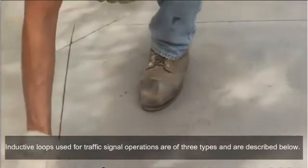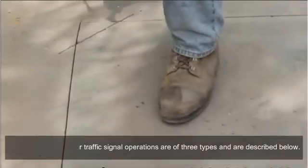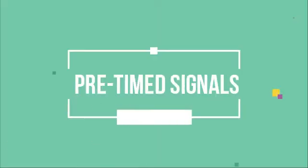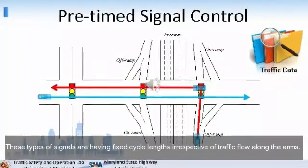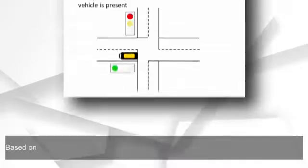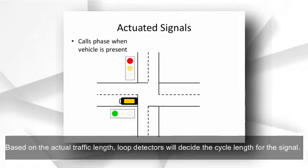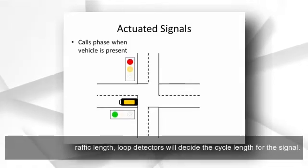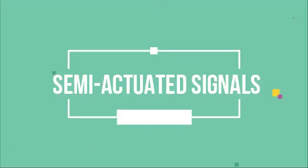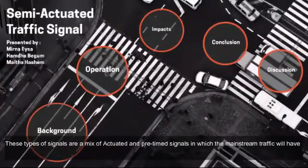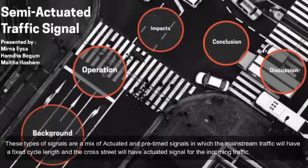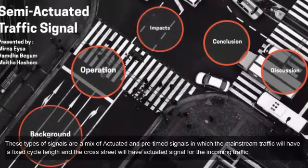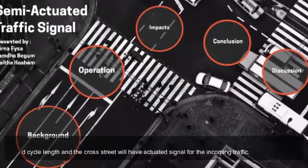What are the types of inductive loops? Inductive loops used for traffic signal operations are of three types. Pre-timed signals have fixed cycle lengths irrespective of traffic flow along the arms. Actuated signals use loop detectors to decide the cycle length based on actual traffic conditions. Semi-actuated signals are a mix of actuated and pre-timed signals, in which the mainstream traffic has a fixed cycle length and the cross-street has an actuated signal for incoming traffic.